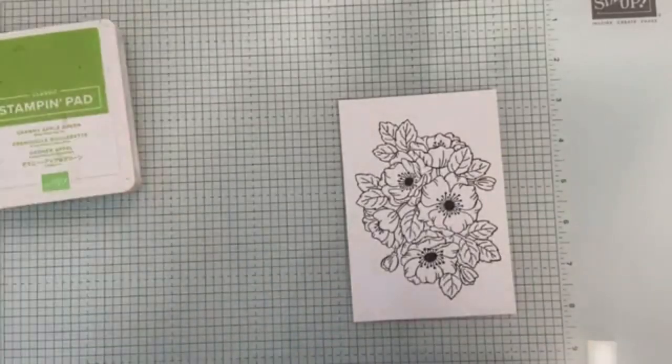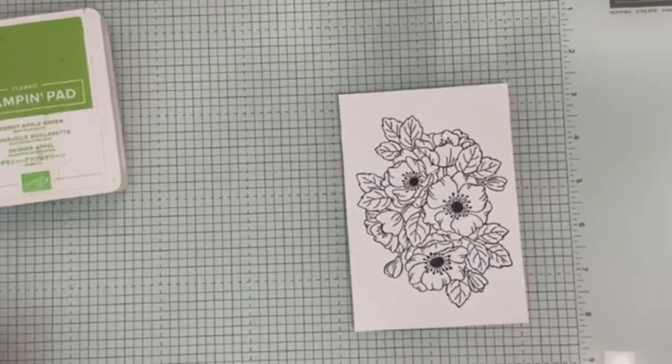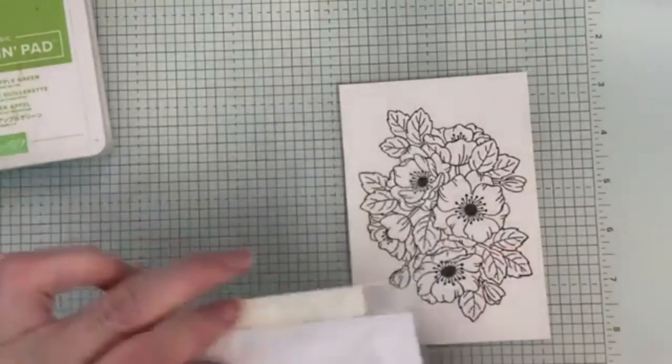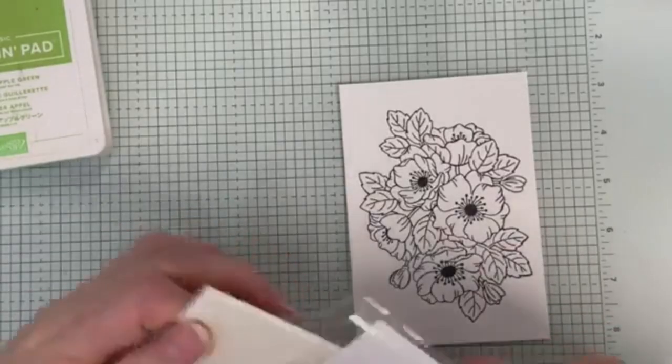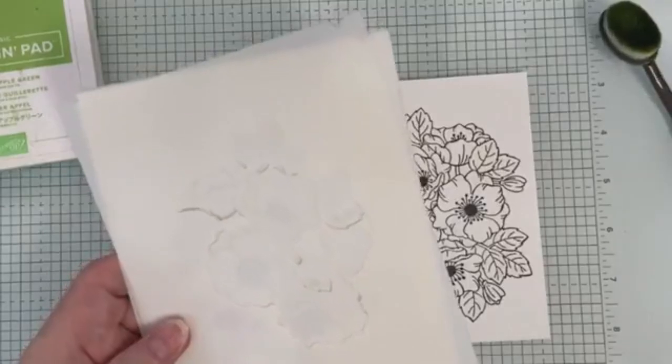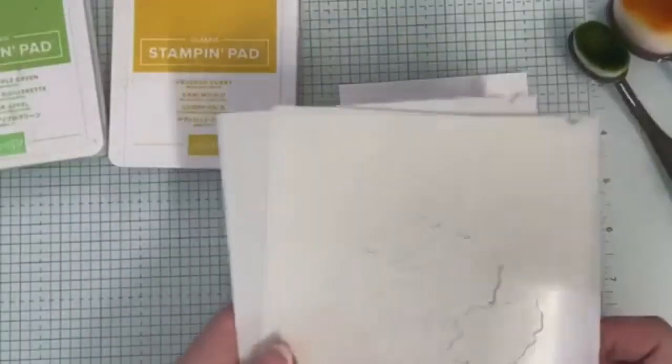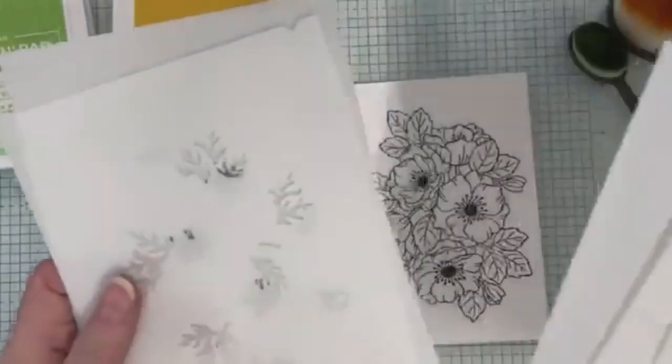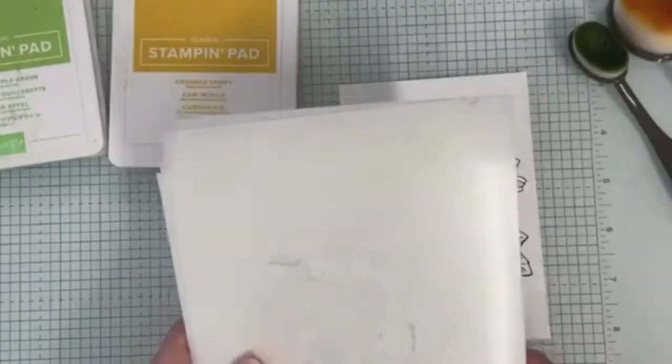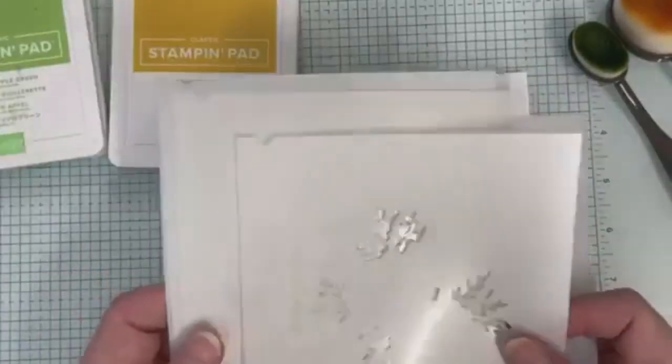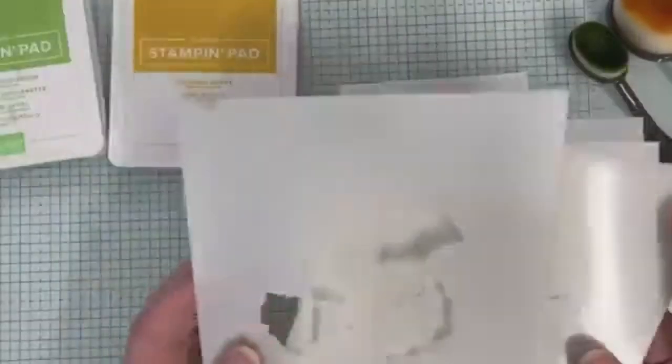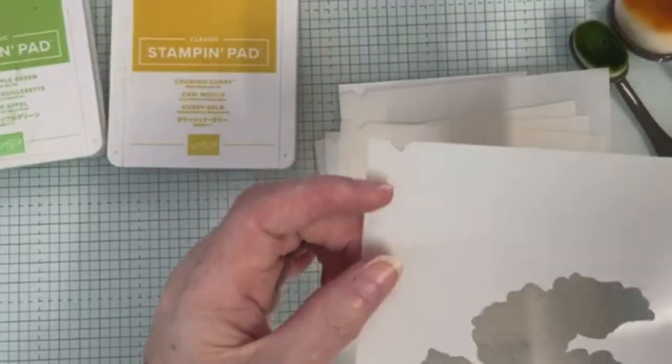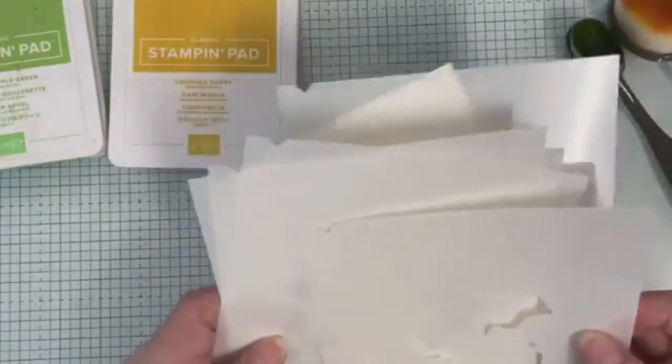I'm going to be using the decorative masks to color this in with my blending brushes and two colors of ink. There are five stencils in this set, so five layers of color. I'll turn them over—they have numbers on them, a bit hard to see in the video. Just in the light you might see the number just below that notch. That's number one, so I'm going to start with number one.